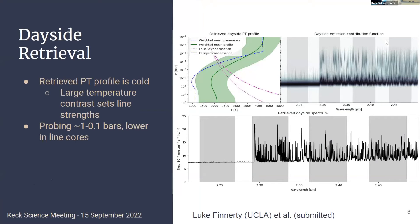Looking first at the thermal structure for the day side — the pressure-temperature profile, showing how temperature varies going higher up to lower pressures — we see there is a thermal inversion as expected, so the lines show up in emission. This profile is running a little bit colder than expected, which we think is because we only observed a narrow range of K-band. Over such a narrow range, the line strength is set more by the temperature contrast rather than the absolute temperature. The emission contribution function shows that most of our emission is coming from a band relatively deep in the atmosphere between 1 and 0.1 bars, with some contribution in the CO line cores from lower pressures. Compared with optical data, we're actually looking very deep in the planet's atmosphere.